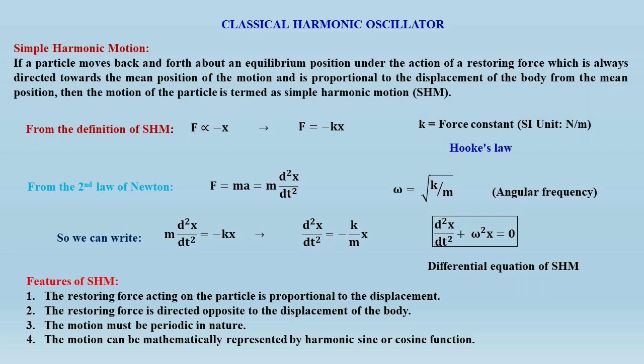We have already discussed about the classical harmonic oscillator, that is simple harmonic motion. If a particle moves back and forth about an equilibrium position under the action of a restoring force, which is always directed towards the mean position and is proportional to the displacement from the mean position, then the motion is termed as simple harmonic motion. This is governed by Hooke's law: the restoring force is proportional to and oppositely directed to the displacement, so F equals minus kx, where k is the force constant.